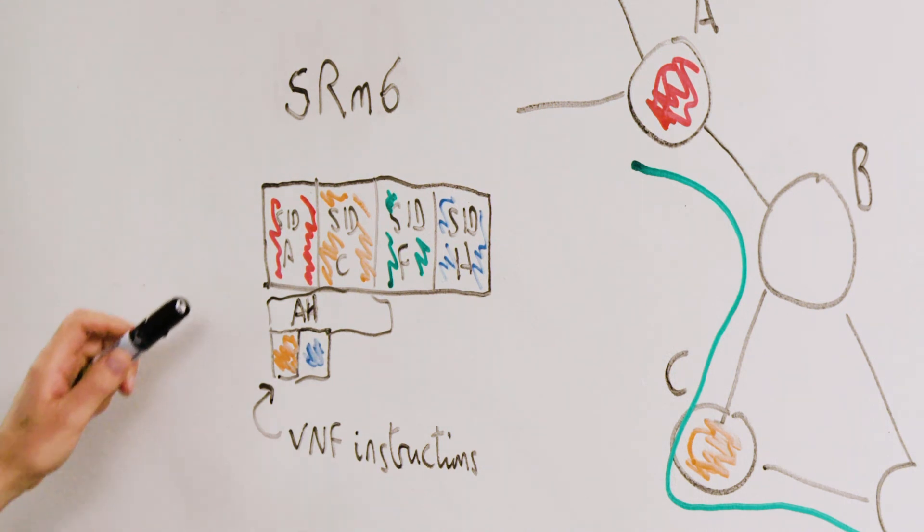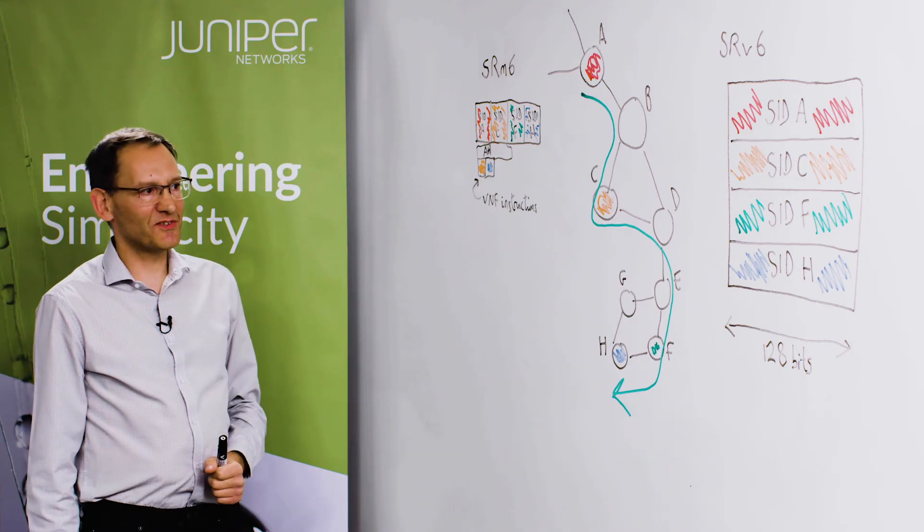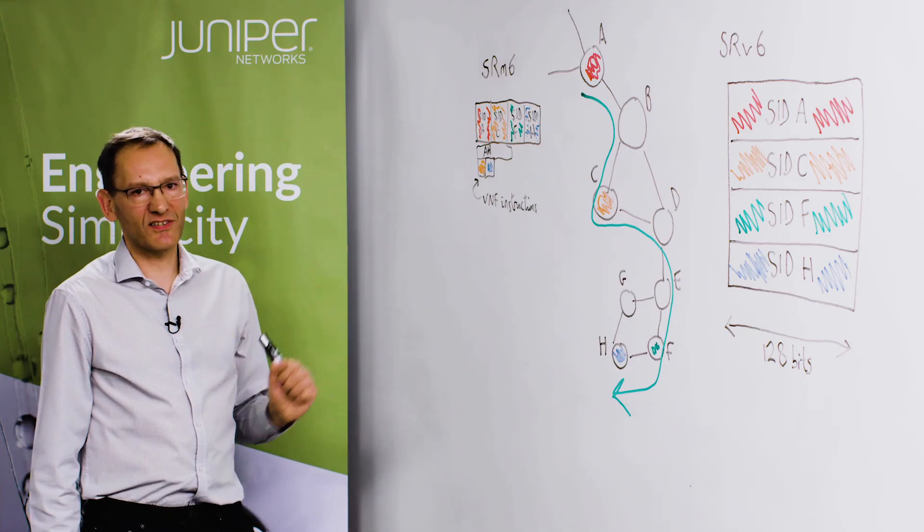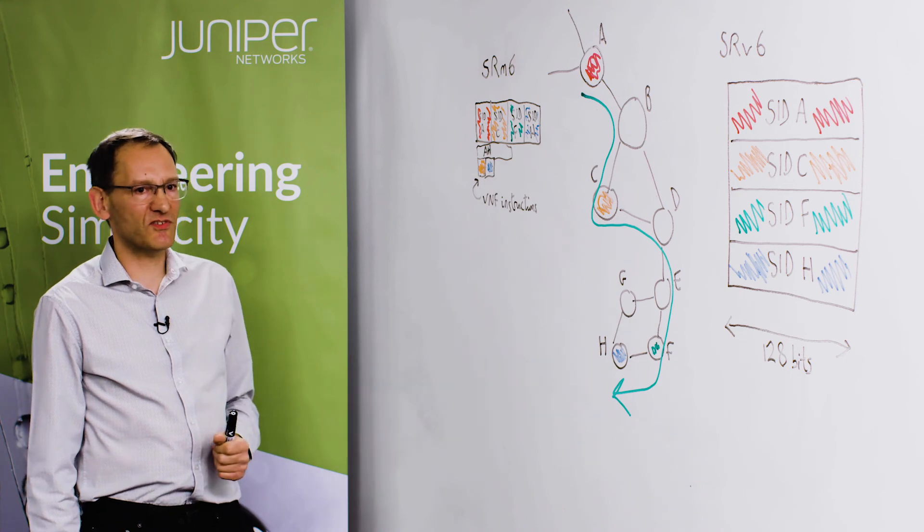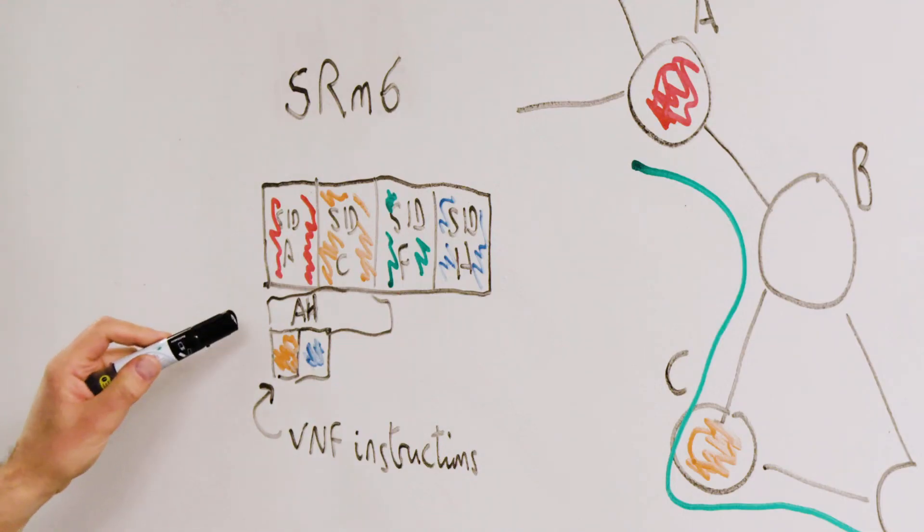The other thing is that we move the VNF instructions into a segment endpoint option to give a clean separation between SIDs and VNF instructions. And so that means we're only taking up space for VNF instructions that actually exist, i.e., corresponding to nodes C and H in our example that are actually doing VNF processing. Furthermore, if you want, you can authenticate those VNF instructions so you know that they haven't been tampered with en route.